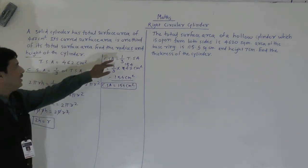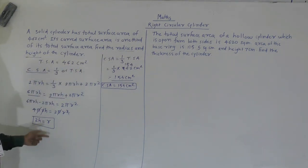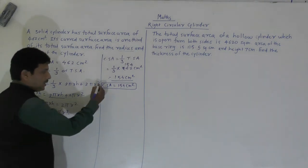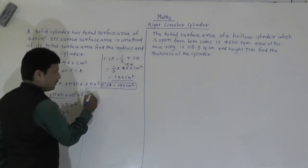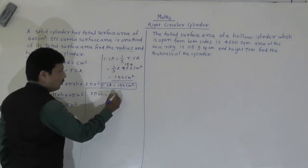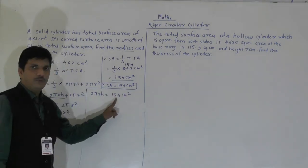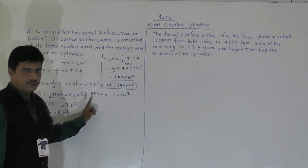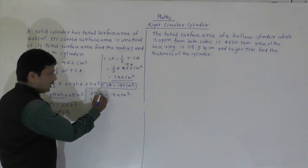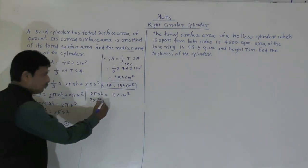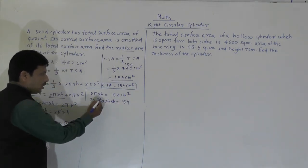Now we have to find out radius and height of the cylinder. Curved surface area is 154 cm². The curved surface area formula is 2πRH. So 2πRH equals 154 cm². Now substituting π as 22/7, and replacing R with 2H, we get: 2 × (22/7) × 2H × H equals 154, which gives (88/7) × H² equals 154.